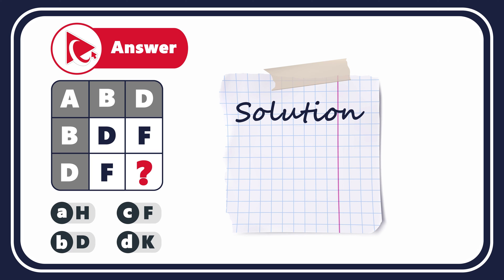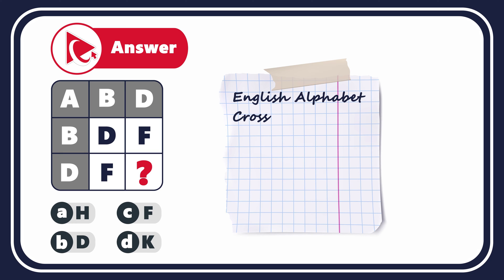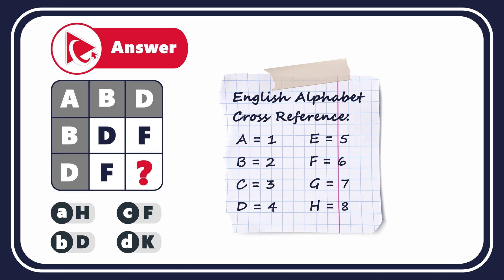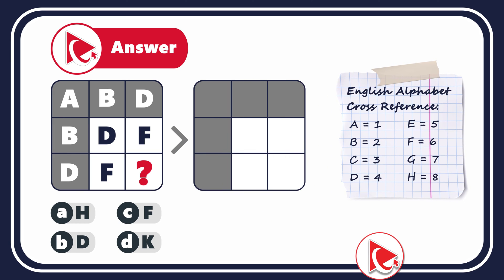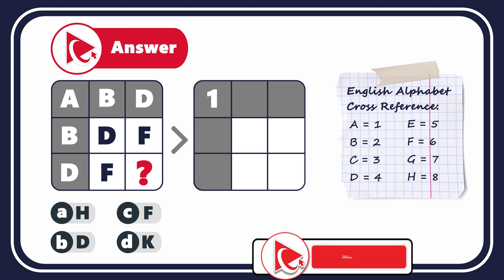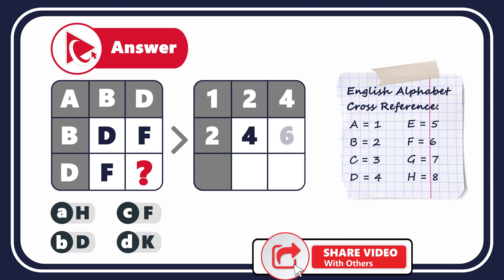To answer this question correctly, let's look at our matrix from a different dimension. Each letter corresponds to a specific place in the alphabet, which can be represented by a number. For example, letter A equals 1, letter B equals 2, C equals 3, and so on. If we follow this logic, we can replace all letters in all three rows with numbers. So for the first row, the numbers are 1, 2, and 4. For the second row, the numbers are 2, 4, and 6.